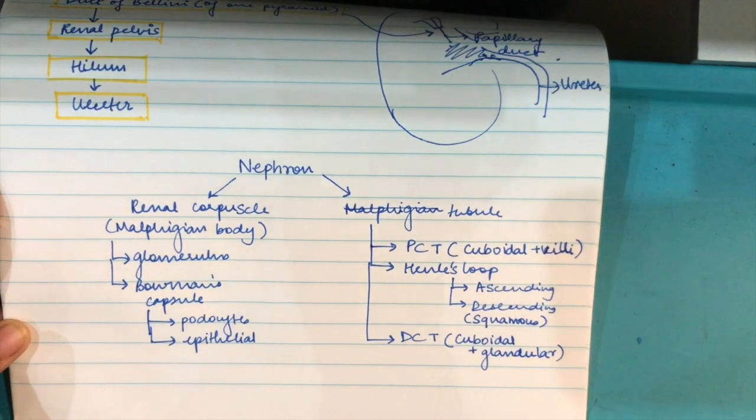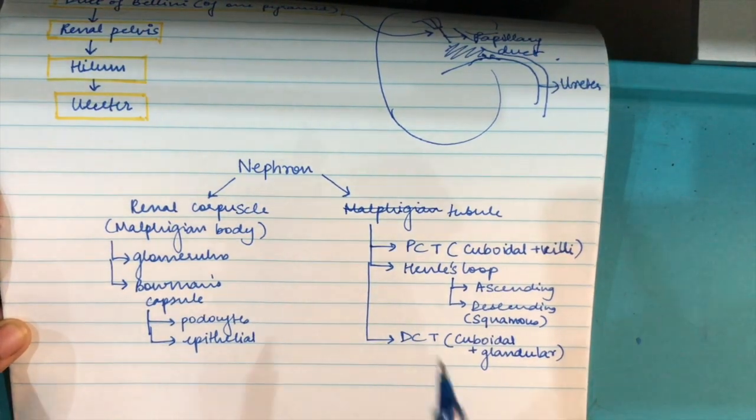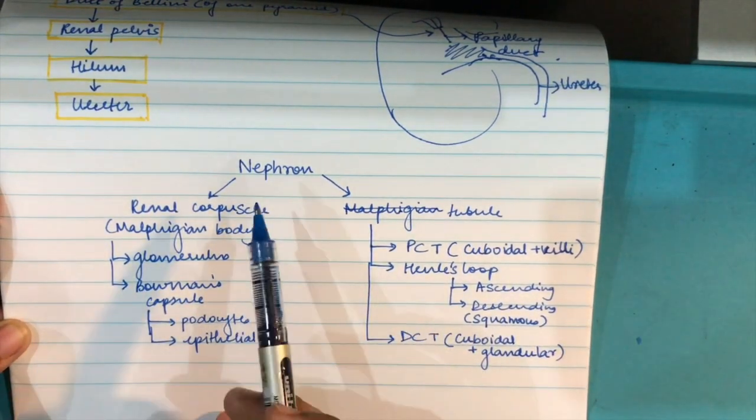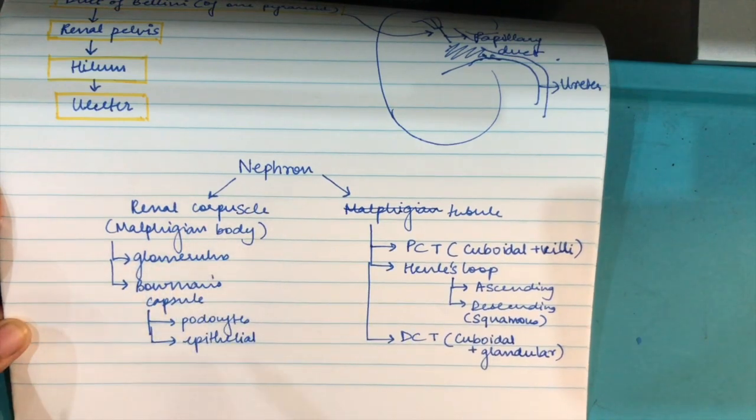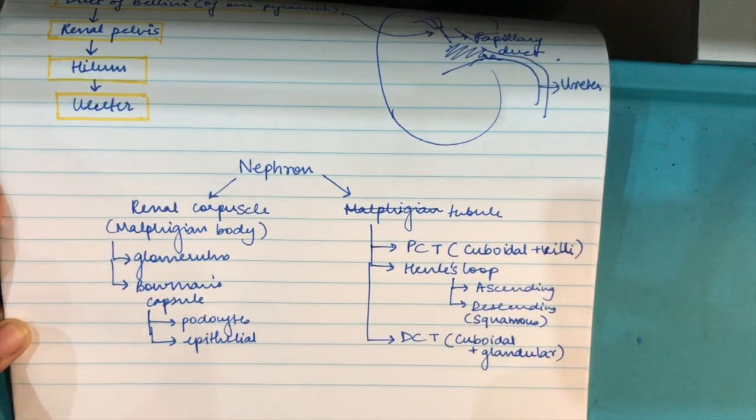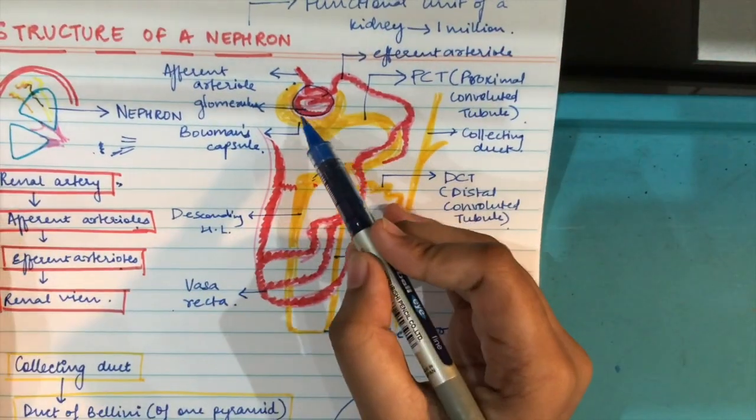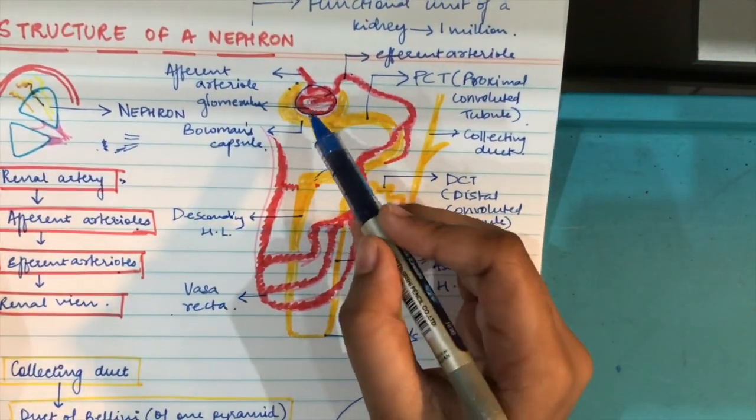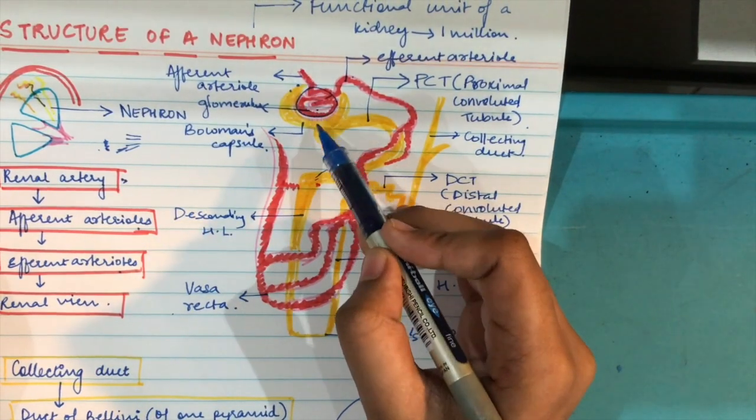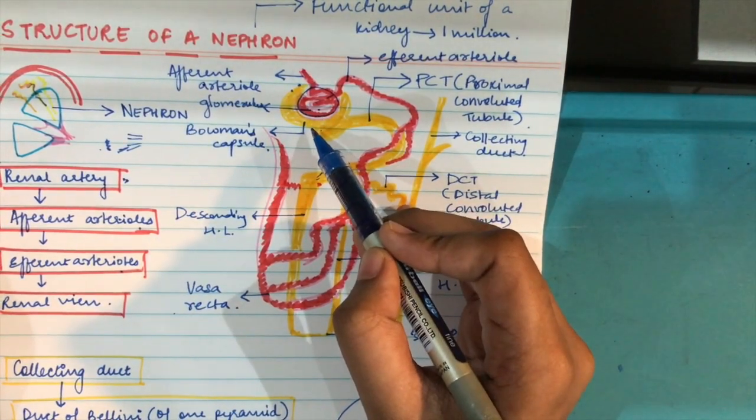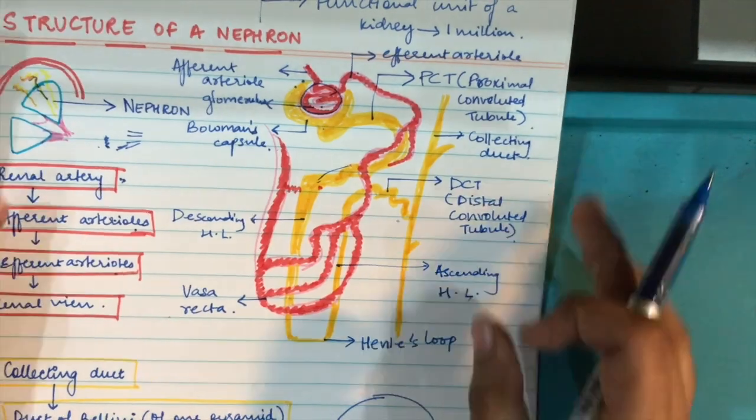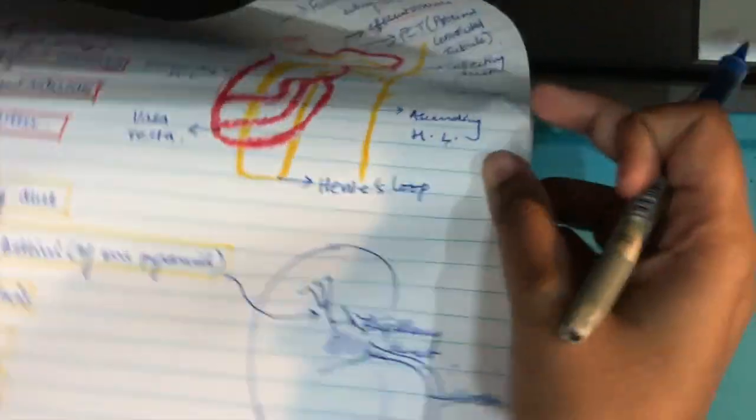This is a part we already discussed but I'm going to tell it to you in a little bit more detail. Nephron we have divided into renal corpuscle and tubule. Renal corpuscle includes this part.